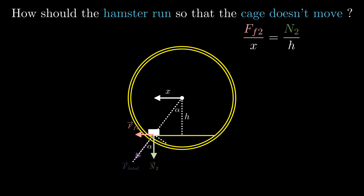Now we can substitute further. The frictional force is the only force responsible for the hamster's acceleration, since the other two vertical forces cancel each other. So we can substitute the frictional force as ma. We've also seen that the normal force equals the weight of the hamster, which is mg, so we substitute that. We can cancel the masses on both sides and rearrange the equation. We get an expression for the acceleration, and the most important thing to notice is that the acceleration is directly proportional to the distance x, since g and h do not change.